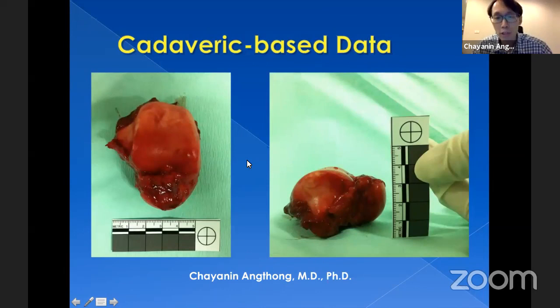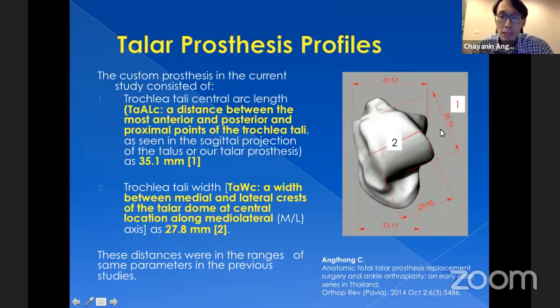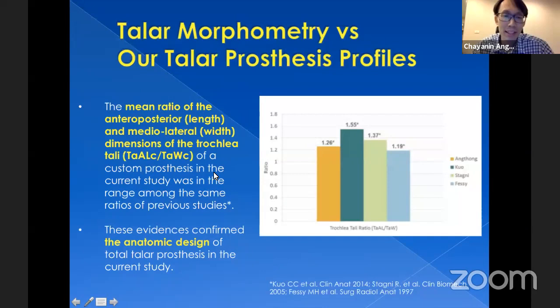Before producing the implant, we sent a cadaver talus to our engineer to learn the real geometry and shape of the talus. The engineer converts the DICOM files from the CT of the contralateral talus and applies the mirroring technique to create the ipsilateral talus. You can measure the geometry and check the shape. Number one is the length of the talar dome, and number two is the width of the talar dome. I studied the profile ratio of length divided by width, and found it was in accordance with previous study results.